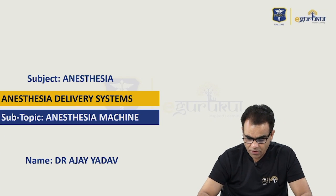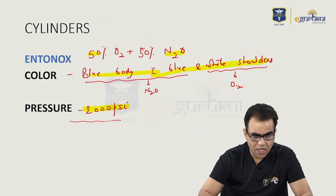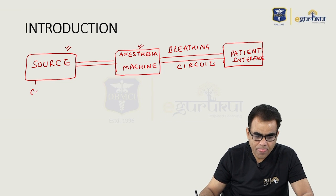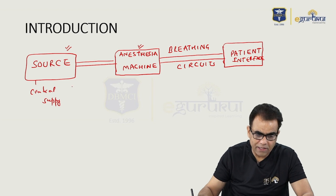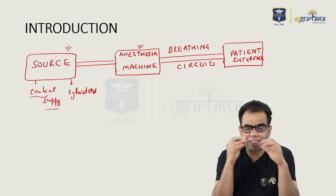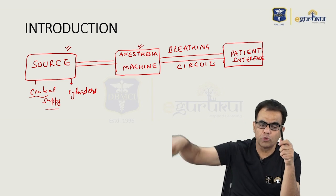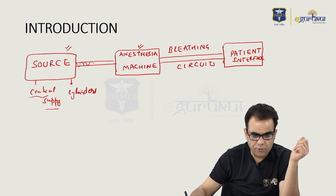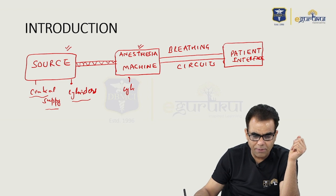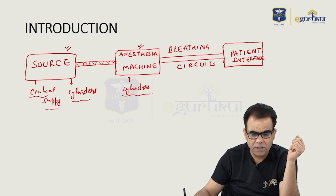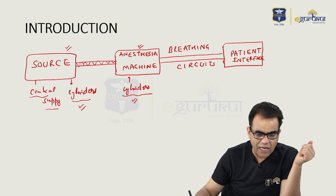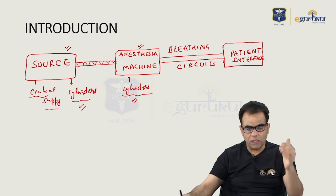Now, anesthesia machine. We have seen that sources of gases can be central supply or can be cylinders. With central supply, there will be a central supply room with a bank of cylinders, and through pipes, gases will be delivered to the anesthesia machine. Cylinders may be part of central supply or directly attached to the anesthesia machine. Either way, gases through central supply or through cylinders are delivered to the anesthesia machine.